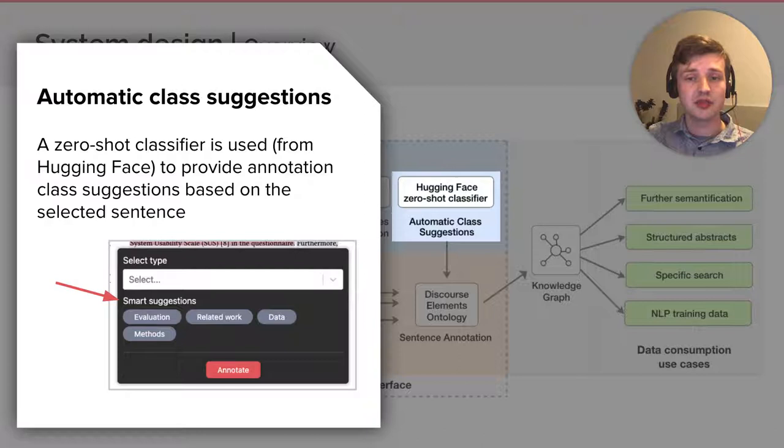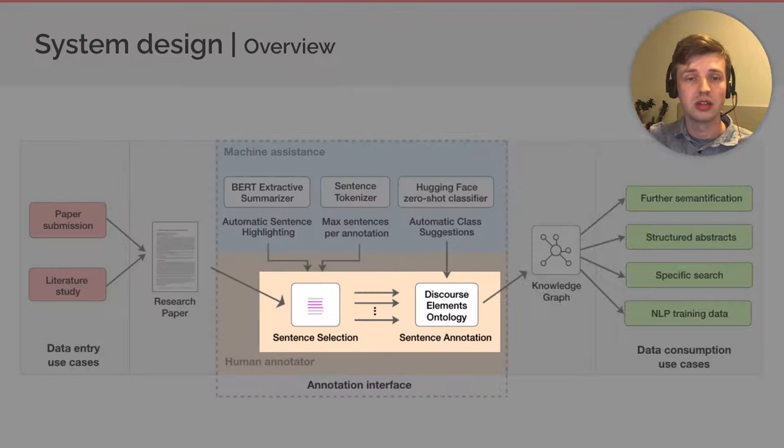Next, the automatic class suggestions. Once a sentence is selected, a set of potentially relevant classes are displayed. These classes are determined using a zero-shot classifier and are based on the contents of the selected sentence. Also here, in case the suggestions are not helpful according to the user, they can be ignored.